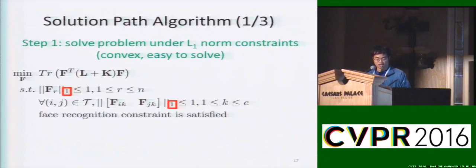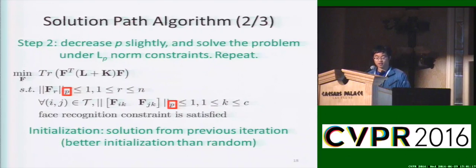The first step is to solve the same problem, but under L1 norm constraints, which makes the problem convex and easy to solve. Then, we solve the same problem, but under P norm constraints, where P gradually decreases from 1 to 0. To initialize the optimization process for the current P, the solution from the previous P is utilized. We believe this is a better initialization than random initialization.